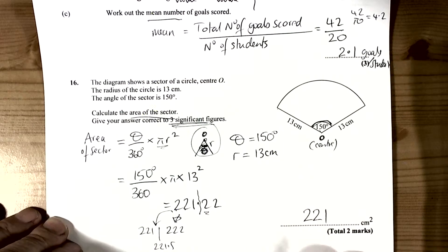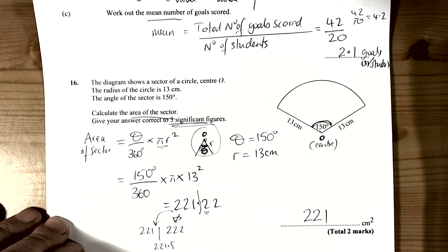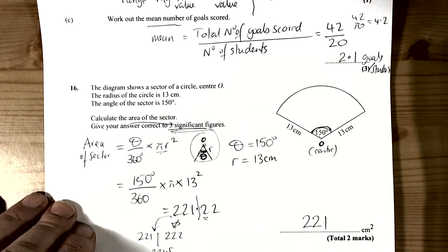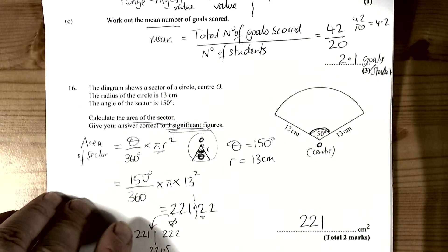So that's a reminder of how to calculate the area of a sector when we're given the angle and the radius. Another question involves area and volume.